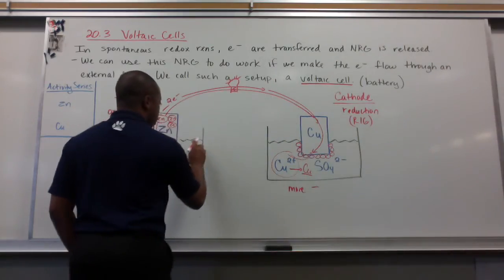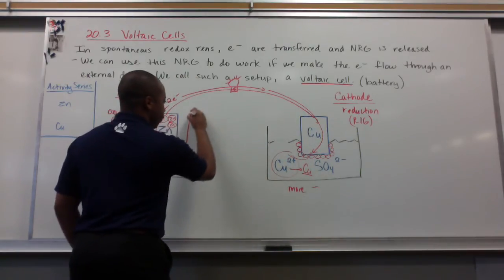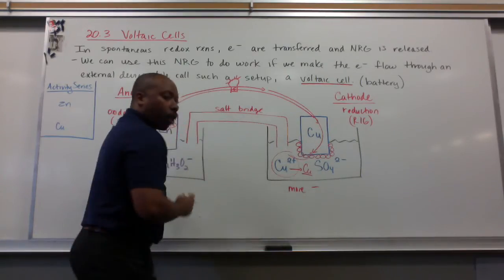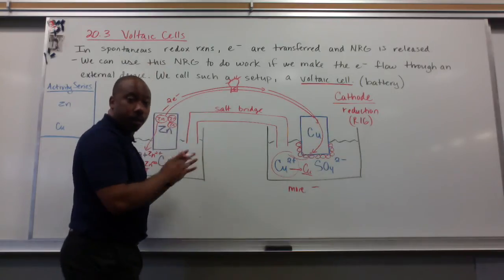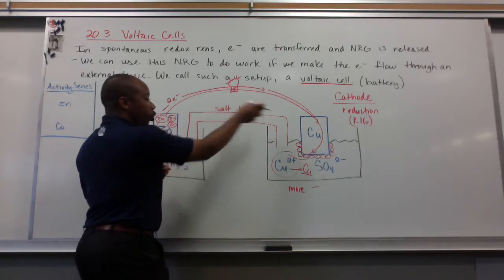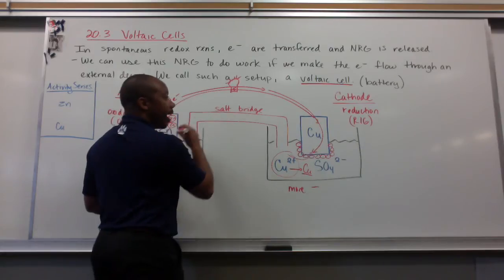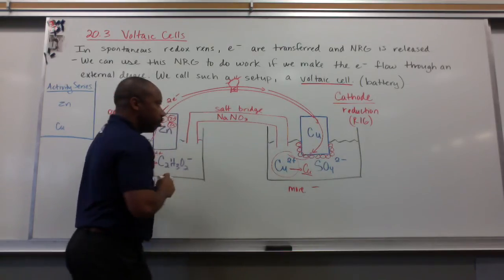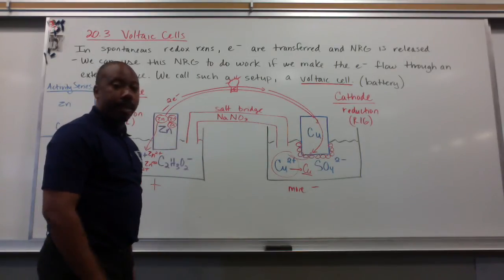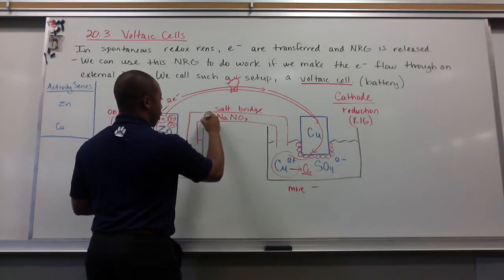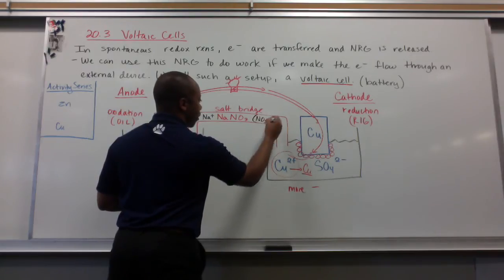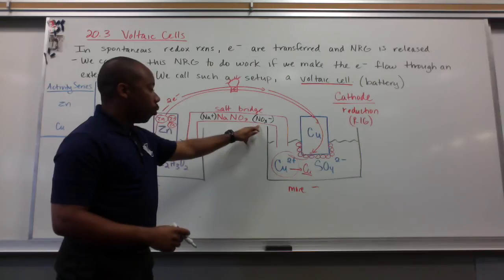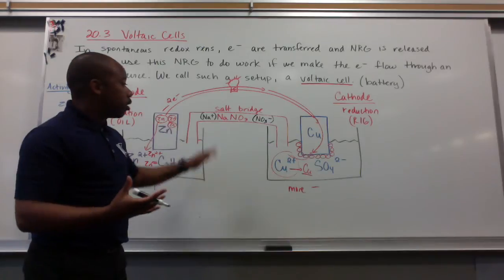We restore balance with voltaic cells by using something called a salt bridge. A salt bridge is generally a U-tube, the original U-tube, not the website. But you know, a glass tube that can be inverted here. A U-tube that contains an ionic solution, electrolytic solution. Usually a solution that has two spectator ions in it. So NaNO3. And in this solution, you'd have Na plus, obviously and NO3 one minus at your disposal. Because this is an aqueous solution.